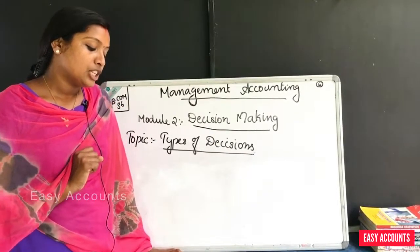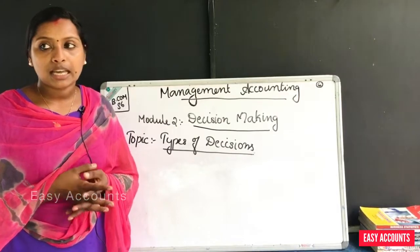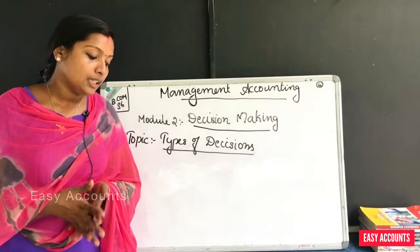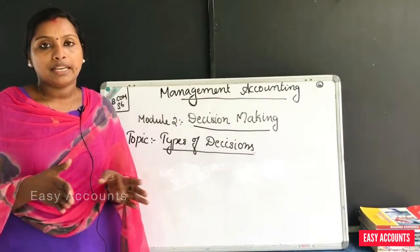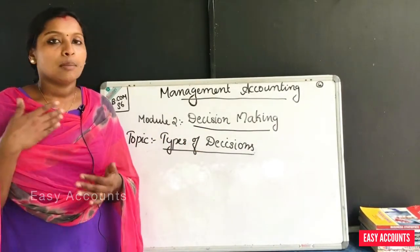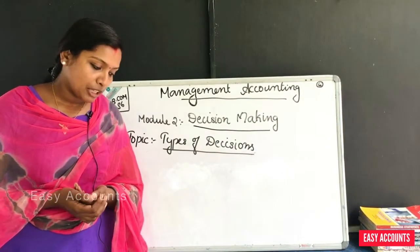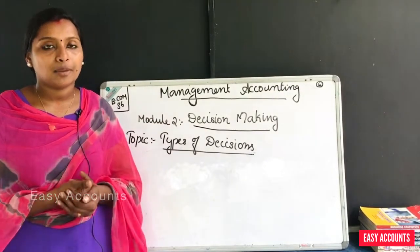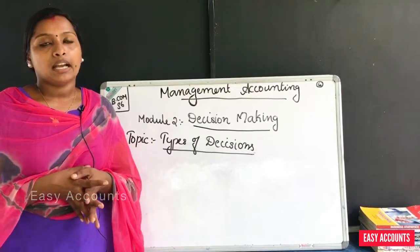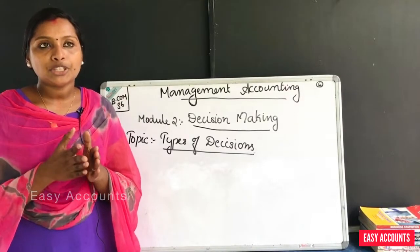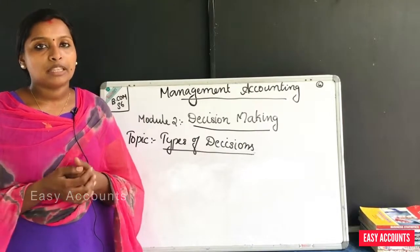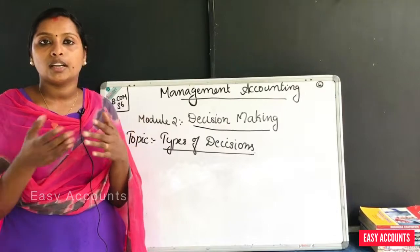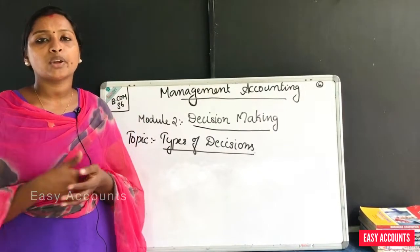The last type is institutional decisions. These are related to decisions regarding diversification of activities, raising additional capital, acquisition, merger, etc. For example, if a company wants to diversify its activities or merge with another company, those are institutional decisions.